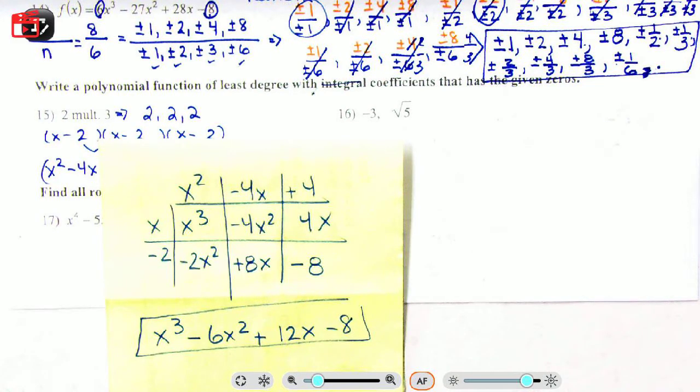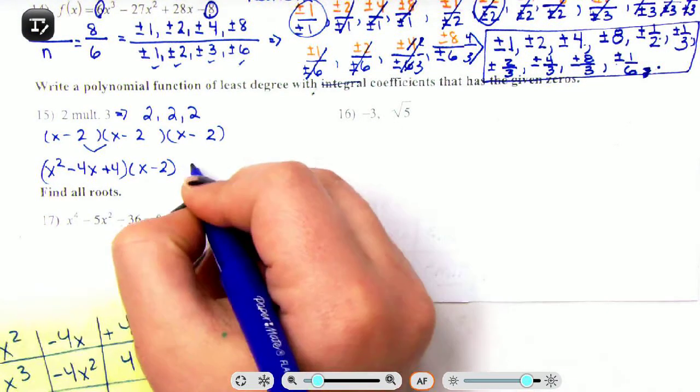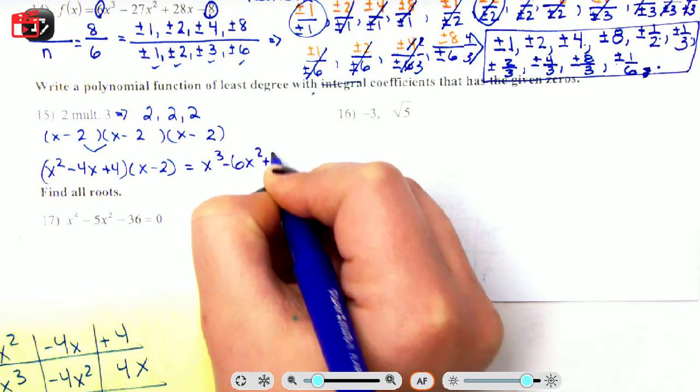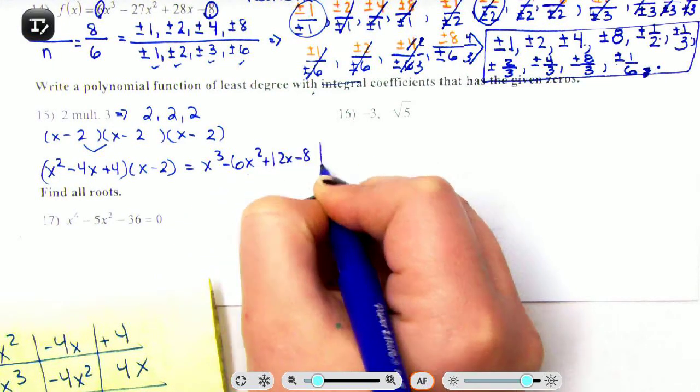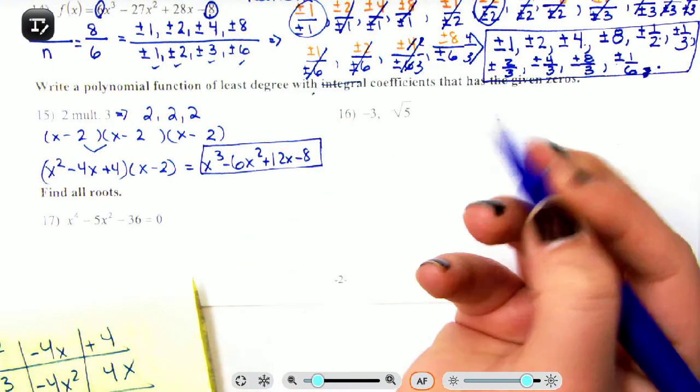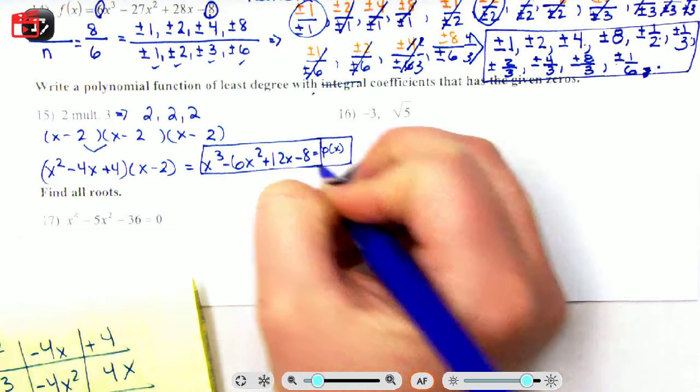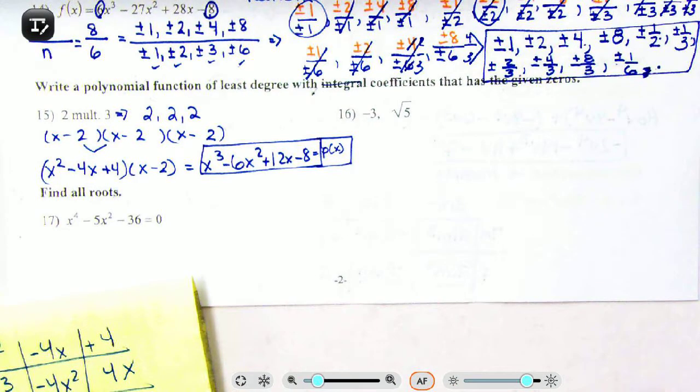Okay, let's see if I don't think I have room to write here. Maybe x³ - 6x² + 12x - 8. I do have room there it is. So it is a polynomial function, so you need to set it equal to p(x). That's something I forgot.